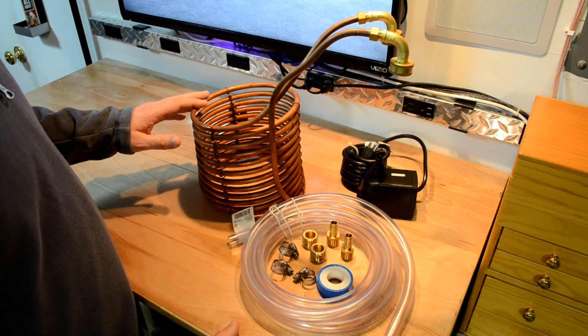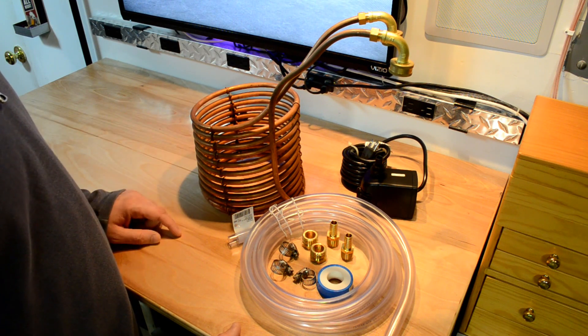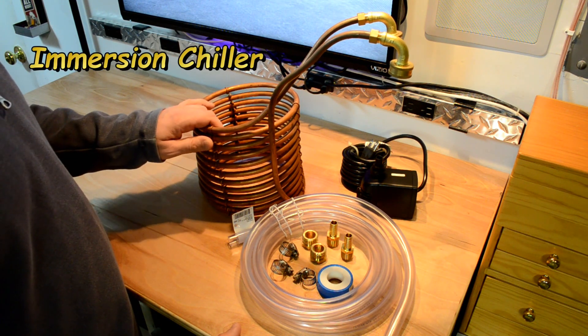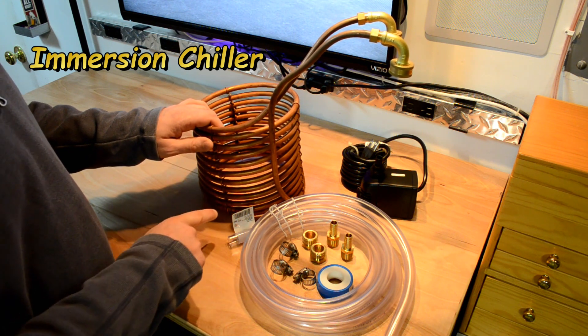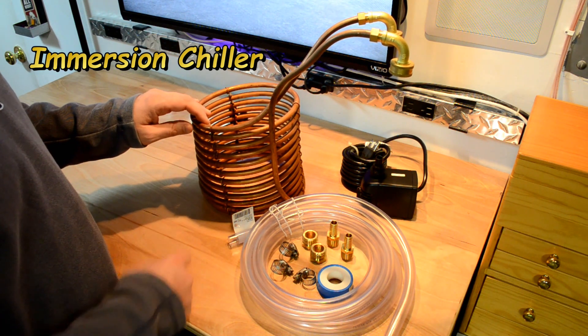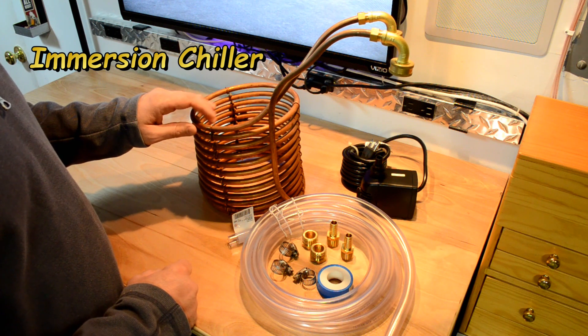What we have here is the equipment I'm going to use today. So for starters, you need an immersion chiller like this one here. I've had this one for probably 16 years now, bought it from a local homebrew shop. I'm guessing it's about 20 feet of coil, 3/8 OD copper tubing.